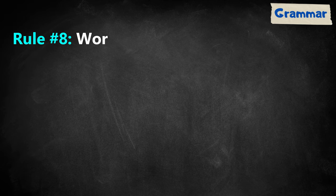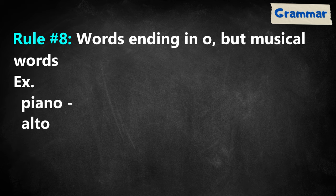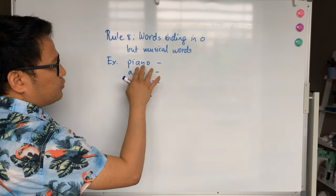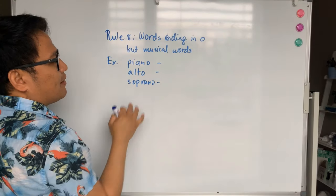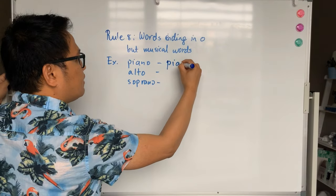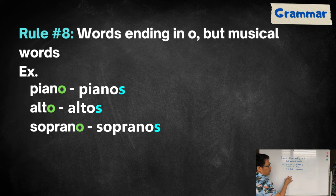Rule number eight applies to words ending in O but they're musical words. For example, piano, alto, soprano. There is exemption to the rule with the words ending in O. With piano, alto, and soprano, you just need to add S. So, piano will become pianos, alto becomes altos, soprano becomes sopranos.